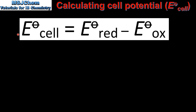The cell potential can be calculated using this equation. The cell potential measured under standard conditions is equal to the standard electrode potential of the half cell that undergoes reduction minus the standard electrode potential value of the half cell that undergoes oxidation. An easy way to remember this equation is E red minus E ox.